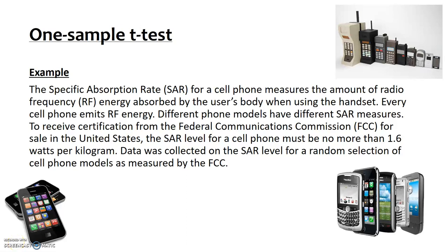This is an example of a one sample t-test. Our example looks at the specific absorption rates for cell phones, which measures the amount of radio frequency absorbed by the user. Every cell phone emits a certain amount of energy, and different models have different SAR measurements.